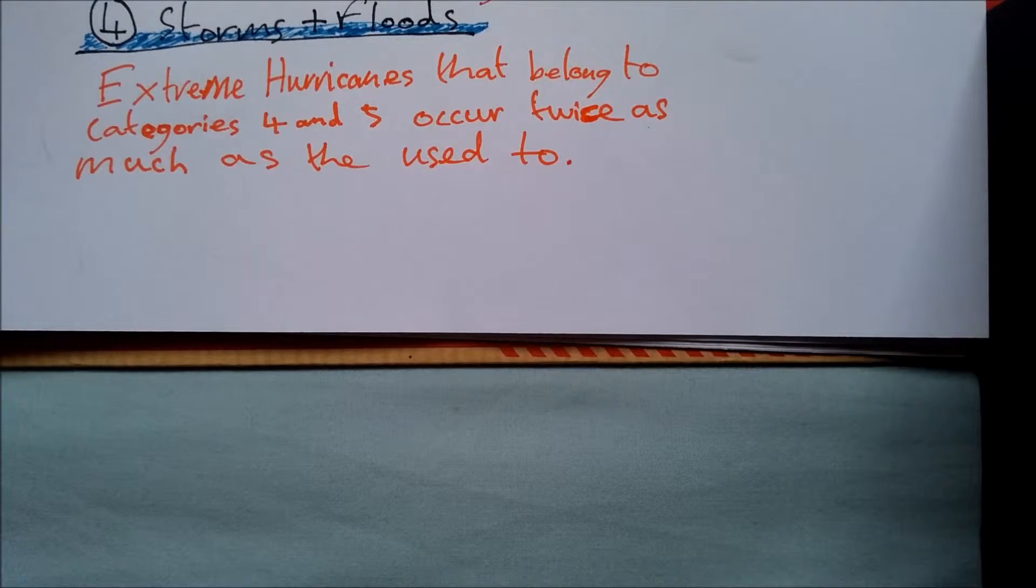Number 4: Storms and floods. Extreme hurricanes that belong to categories 4 and 5 occur twice as much as they used to, and this will only get worse.